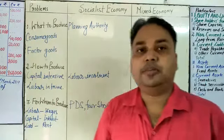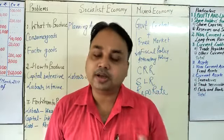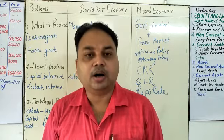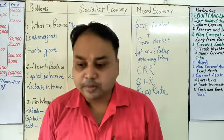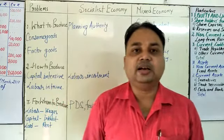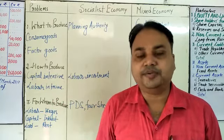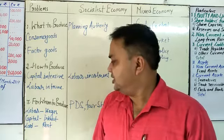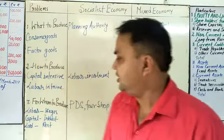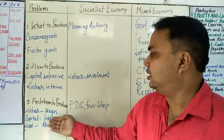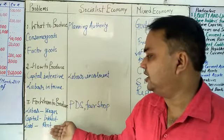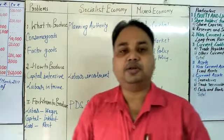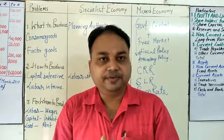For whom to produce is the third problem. Whatever goods and services the economy produces is called national product, and it is converted into national income. This national income is distributed in various income forms — for example, wages, rent, and interest. Labor earns wages, capital earns interest, and land earns rent. These are the main forms of income distribution.